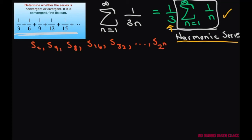So when you do your partial sums, you're going to get S₂, which equals the first term plus term 2. So this is going to equal 1 plus 1/2.